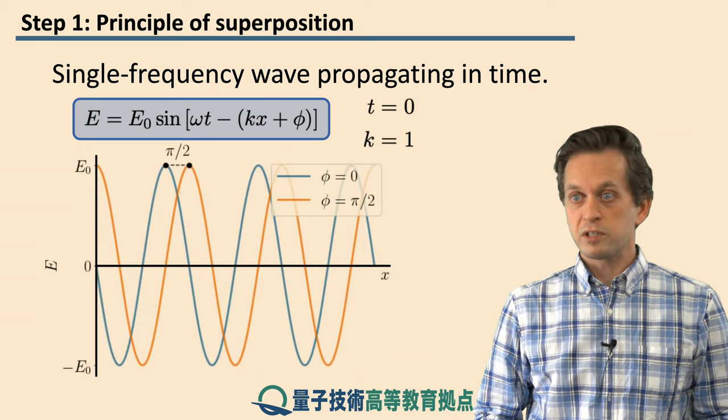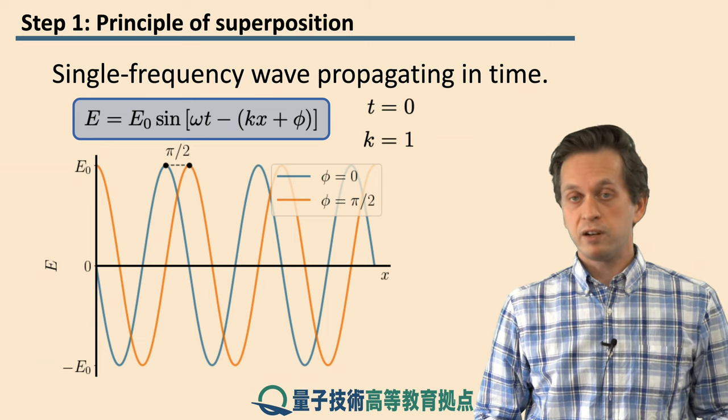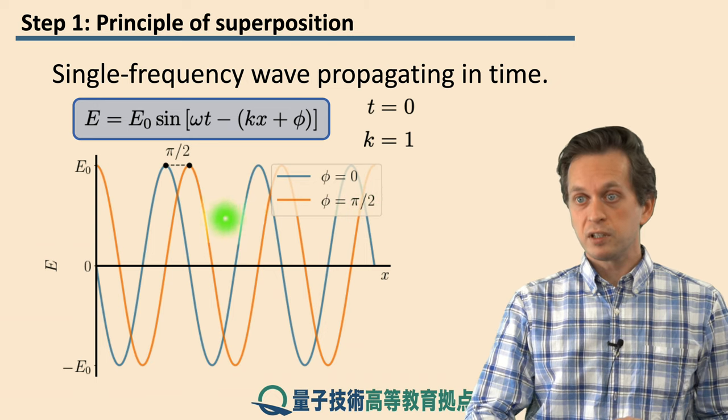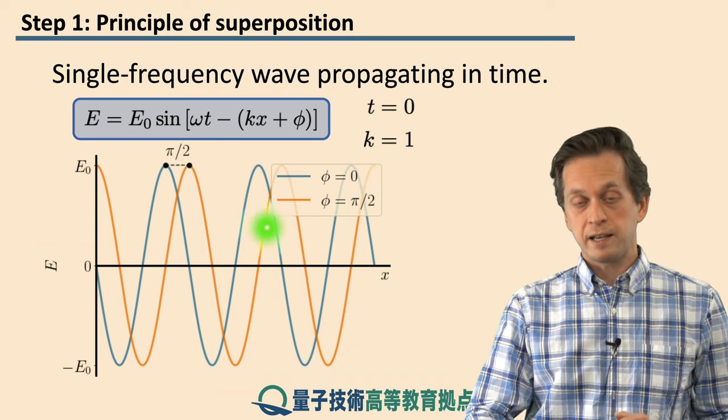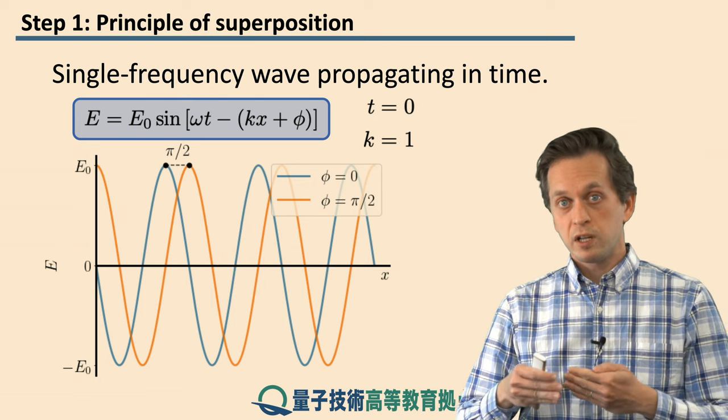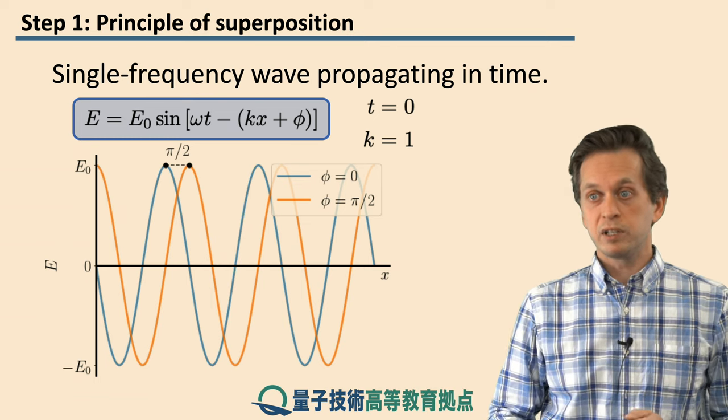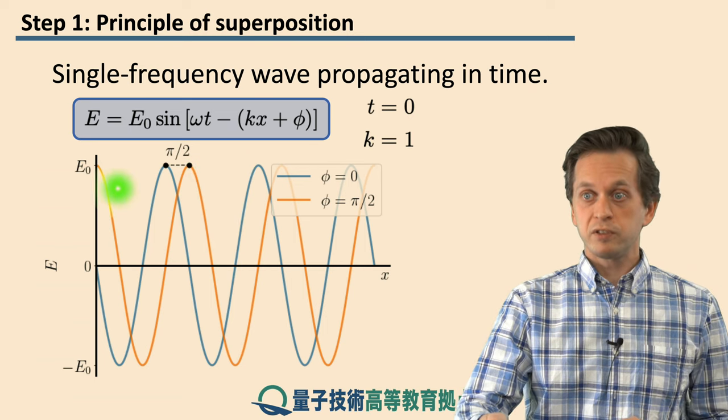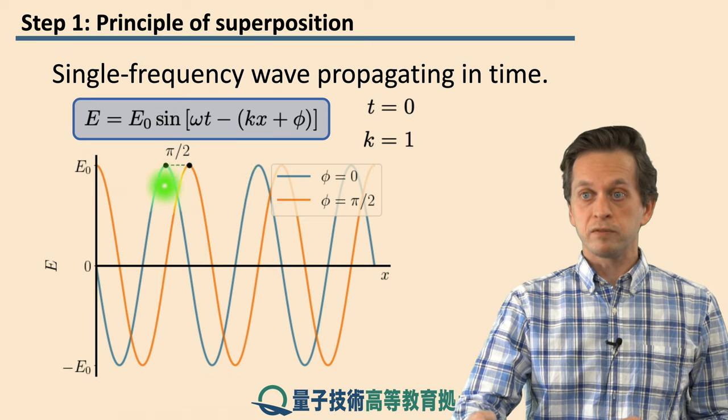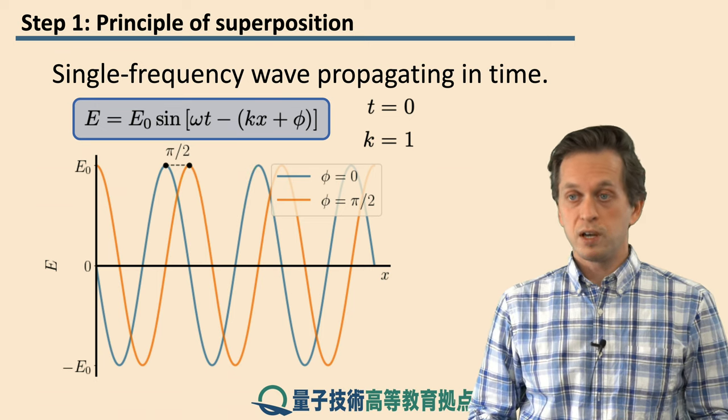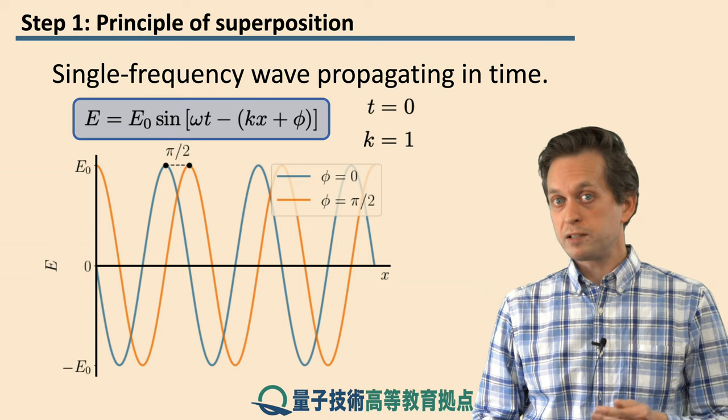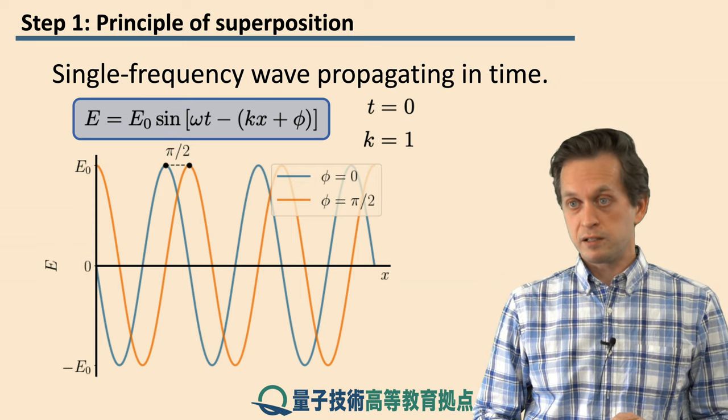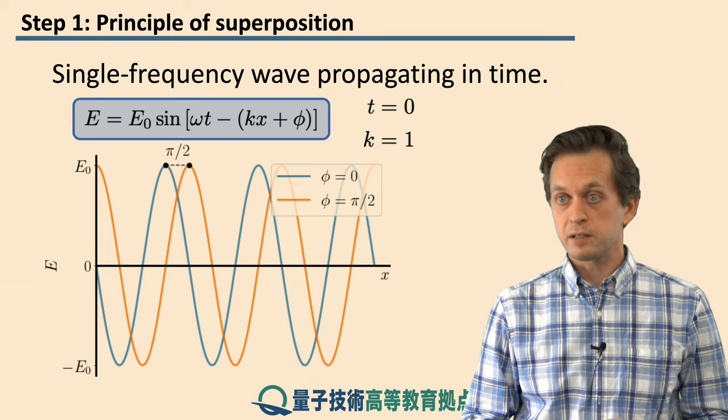Now let's consider what happens when we fix the wave number, but we vary the initial phase. The only thing that happens is that we shift the wave along the x-axis. So really what we are doing, we are just translating the wave a little bit by this angle, by this initial phase phi. So in this case we have shifted the two waves by initial phase of π over two. But this doesn't really affect how fast the wave is propagating, or it doesn't affect its wavelength.